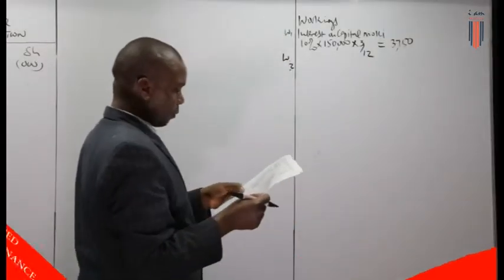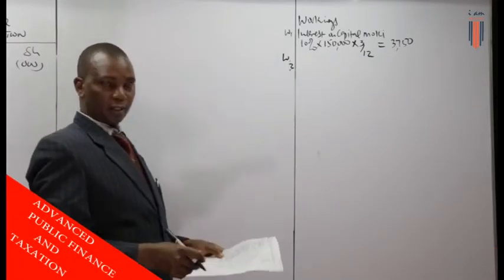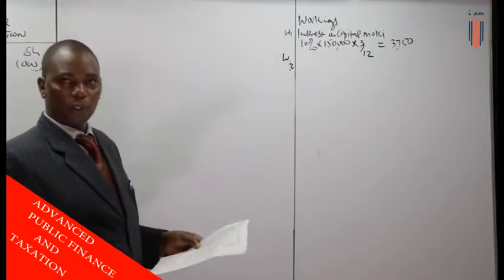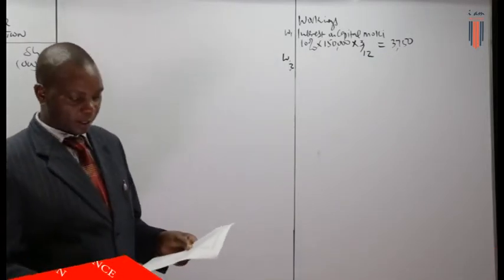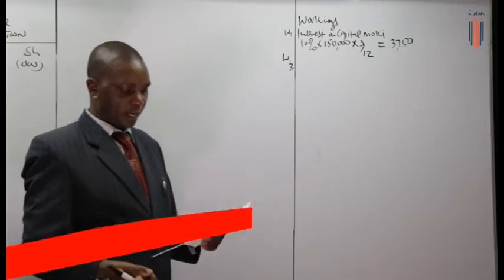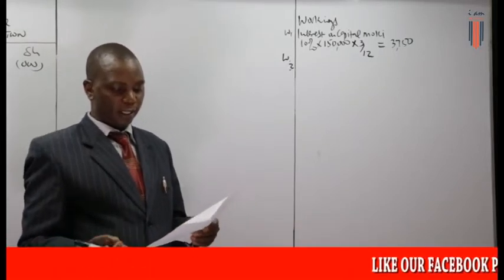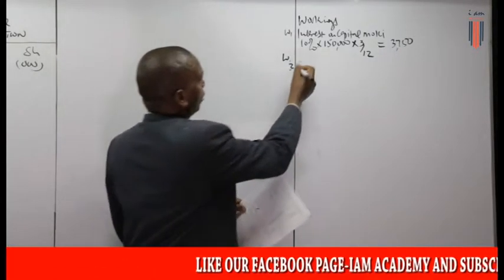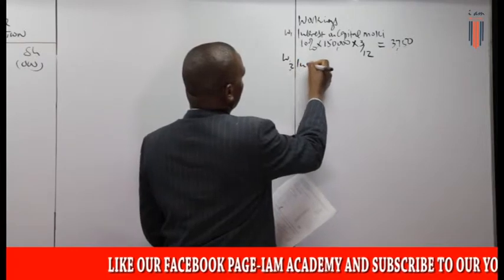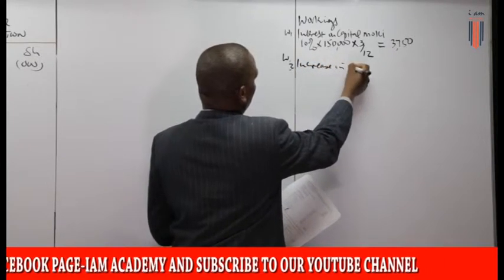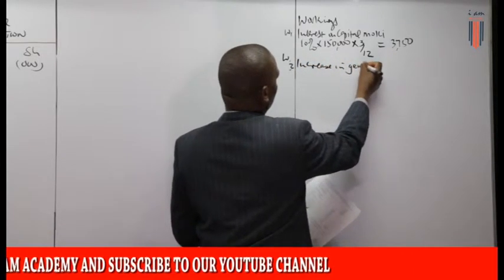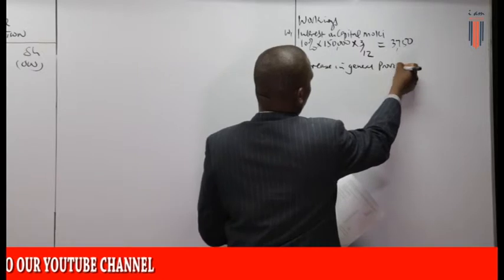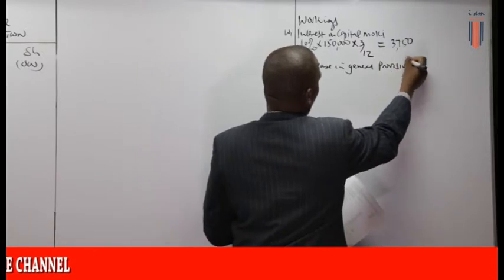Three: we have the analysis of bad debts. Now from this bad debt, what we need to pick is the movement in the general provision. So I'll call it increase in general provision.